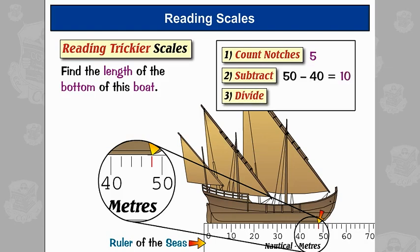And lastly, divide that number by the number of notches. So that's 10 divided by 5, which is 2. So each notch is worth 2 meters.